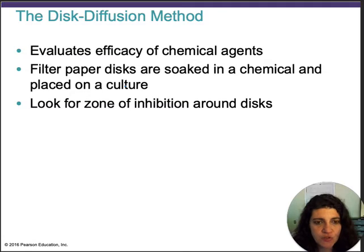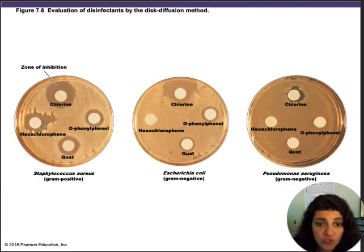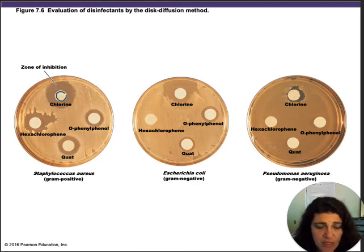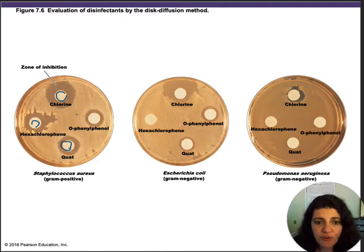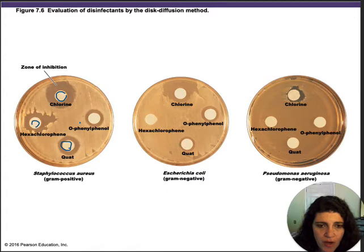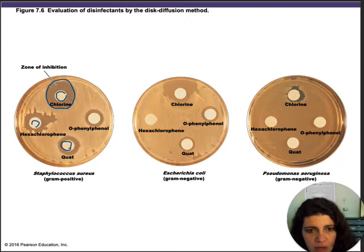In the disc diffusion method, you use a petri dish where you culture your bacteria, then place small paper discs embedded with the drugs or substances you want to test. For example, one disc may be embedded with chlorine, another with hexachlorophene, another with a quaternary ammonium compound. You plate the bacteria first, and where bacteria are not growing you see a clear halo — a zone of inhibition.